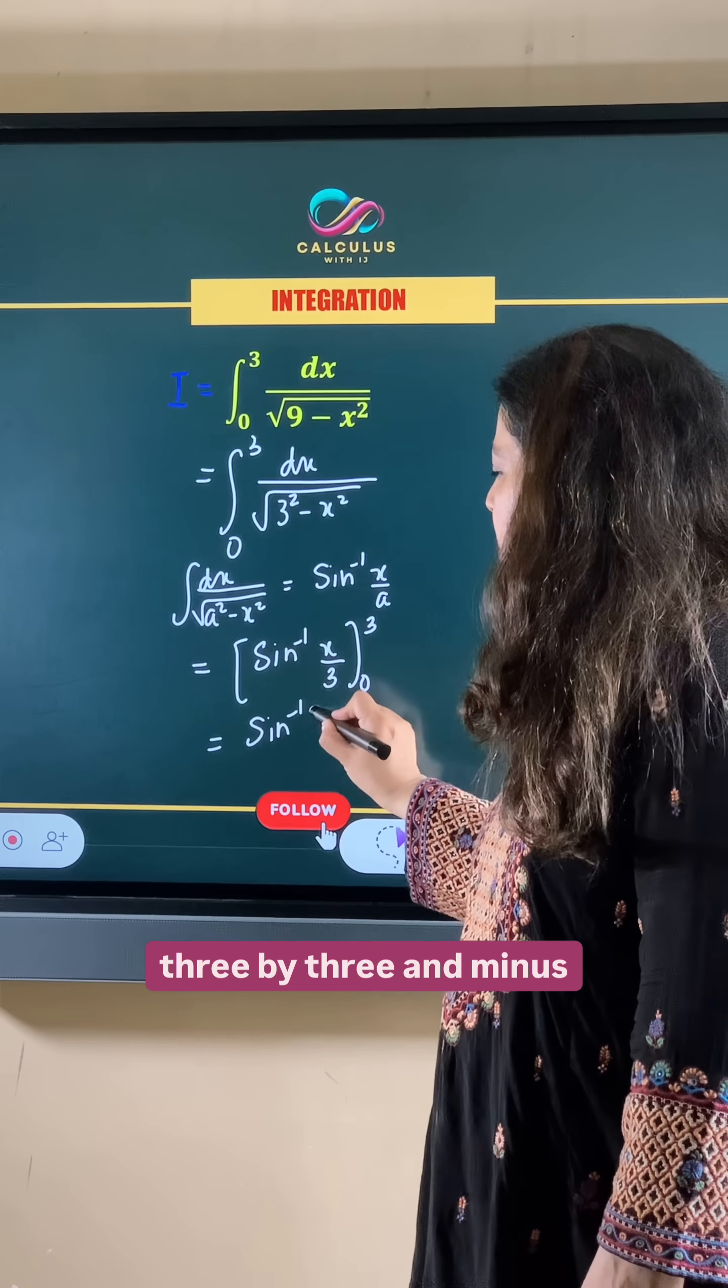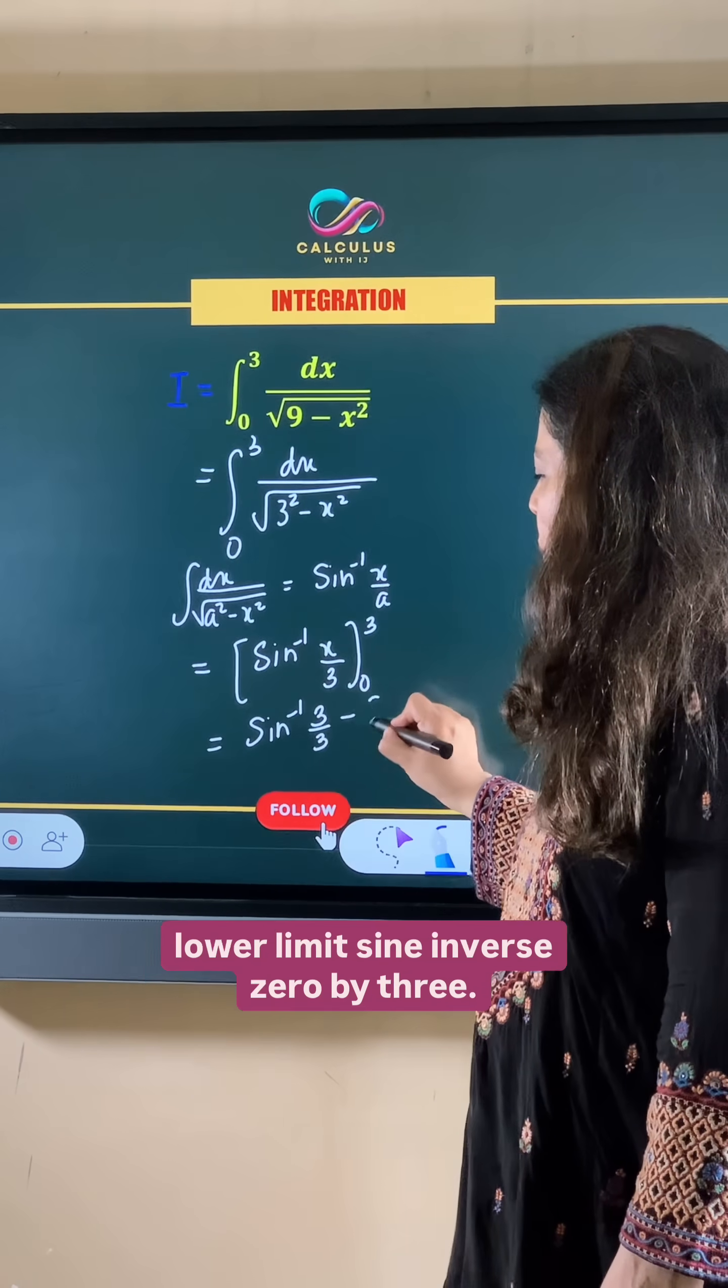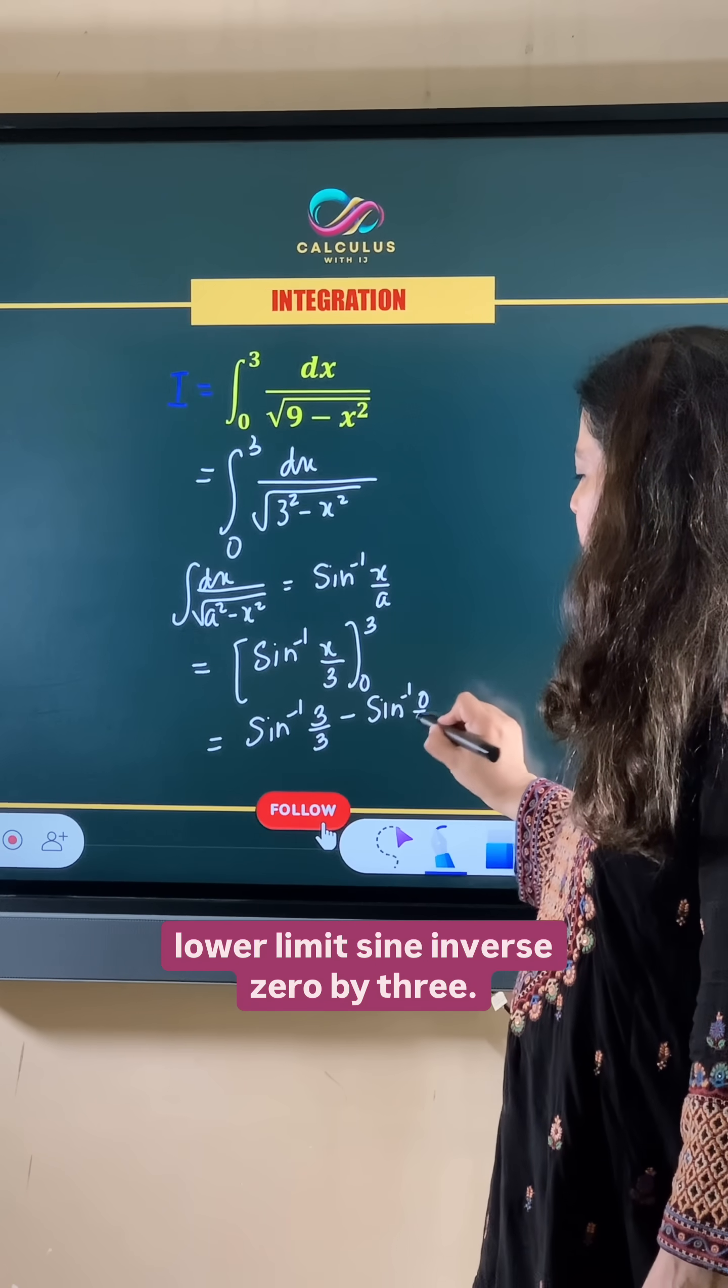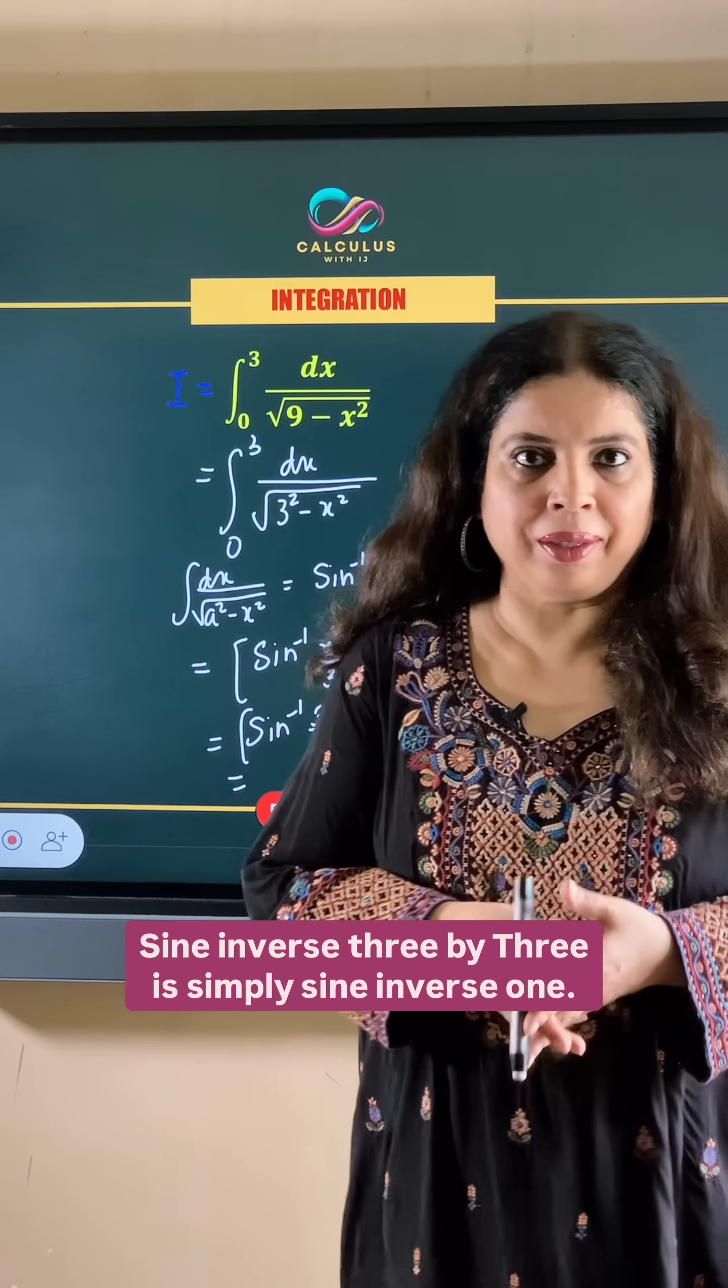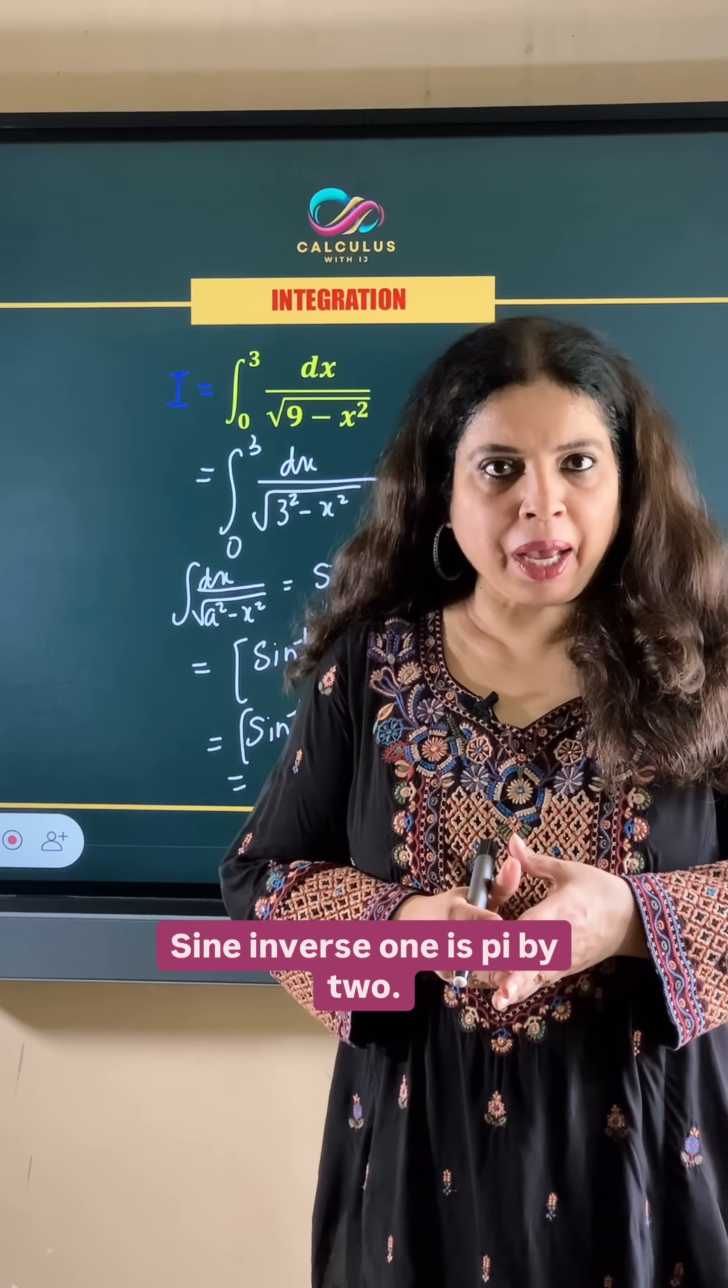So this becomes sine inverse 3 by 3 minus lower limit sine inverse 0 by 3. Sine inverse 3 by 3 is simply sine inverse 1. Sine inverse 1 is pi by 2.